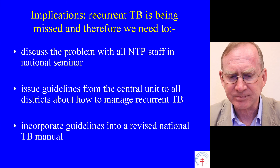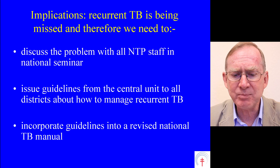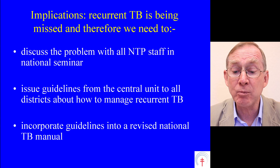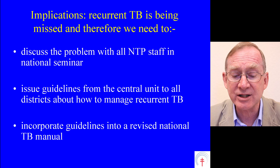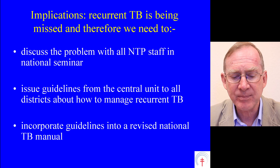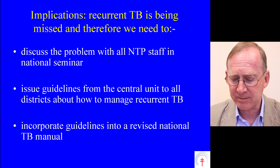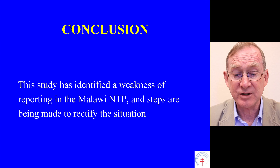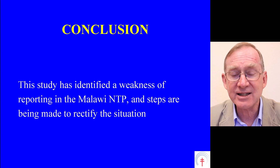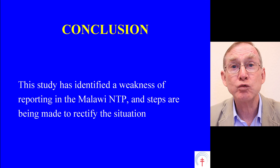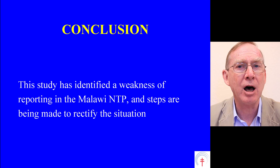What are the implications of the study? There were three implications. Recurrent TB is being missed, and therefore the Malawi national TB control programme needs to: first, discuss the problem with all national TB programme staff in a national seminar; second, issue guidelines from the central unit to all districts about how to correctly manage recurrent TB; and third, incorporate guidelines into a revised national TB manual in the following year. In conclusion, this study has identified a weakness of reporting in the Malawi national TB programme, and steps are being made to rectify the situation. By concluding like that, we have now completed the main part of this scientific paper.